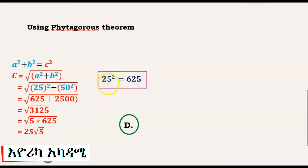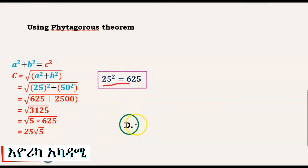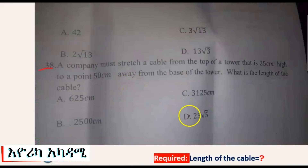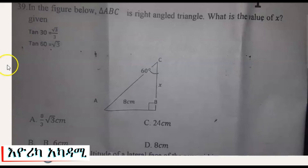Our answer, using the radical, is 25 radical 5. So the length of the cable is 25√5 centimeters.